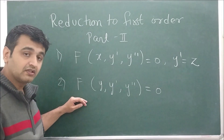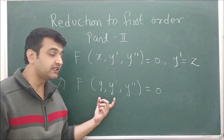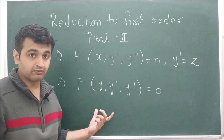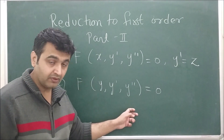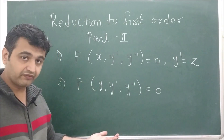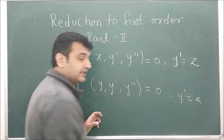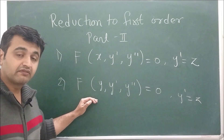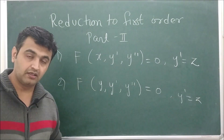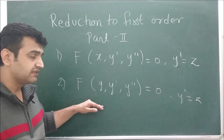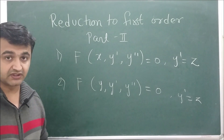The second scenario is a relation involving the dependent variable and its derivatives — so no x, meaning no independent variable explicitly. When you have a differential equation involving y, y prime, and y double prime, you again use the substitution y prime equal to z, which reduces it to a differential equation involving z and y. Once reduced to first order, it can be solved easily.